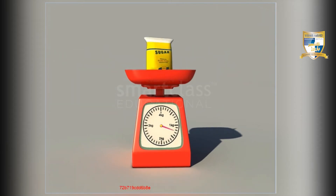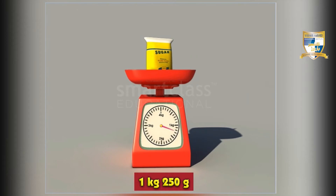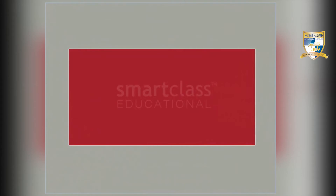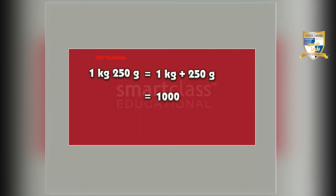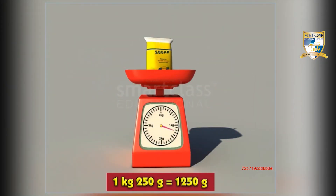Let us try another one. The mass of this packet of sugar is 1 kilogram 250 grams. What is its mass in grams? First, split 1 kg 250 grams into 1 kg plus 250 grams. 1 kg equals 1000 grams. Add 1000 grams and 250 grams, and you get 1250 grams. So the mass of this packet of sugar in grams is 1250 grams.